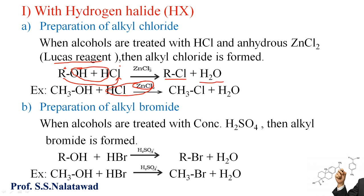This anhydrous ZnCl2 increases the rate of conversion of alcohol into alkyl halide. Next is preparation of alkyl bromide, where hydrogen halide is HBr. The general reaction is: when alcohols are treated with HBr and concentrated H2SO4, alkyl bromide is formed.